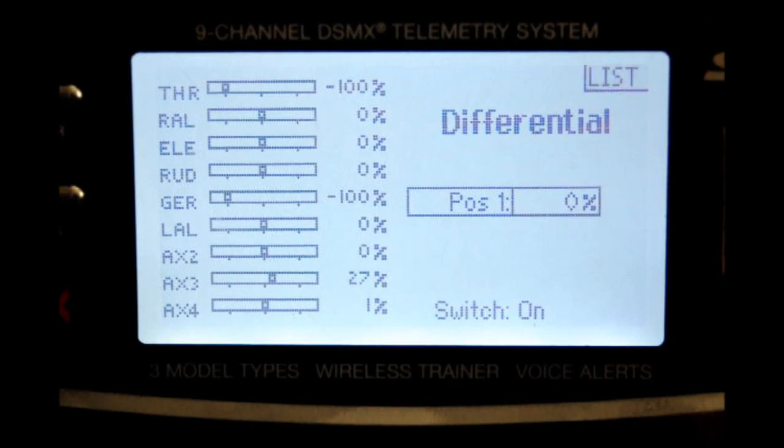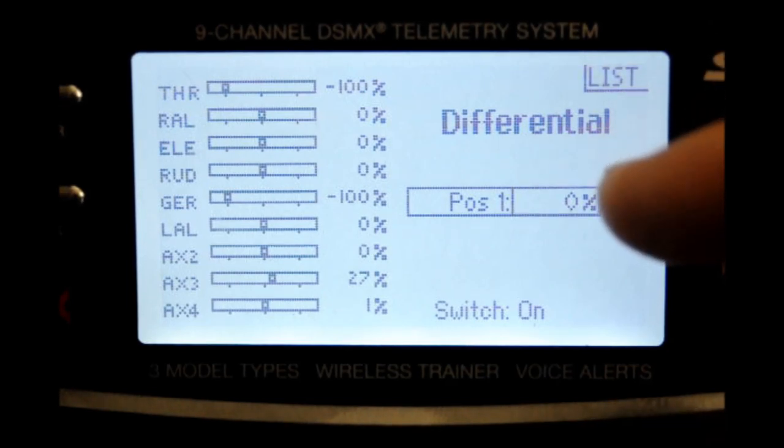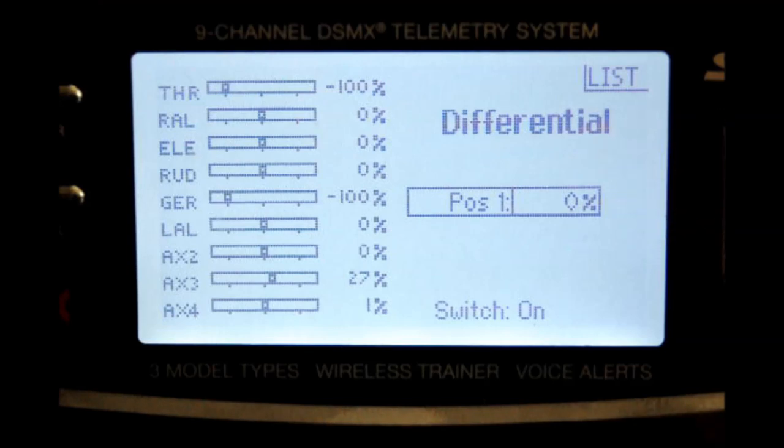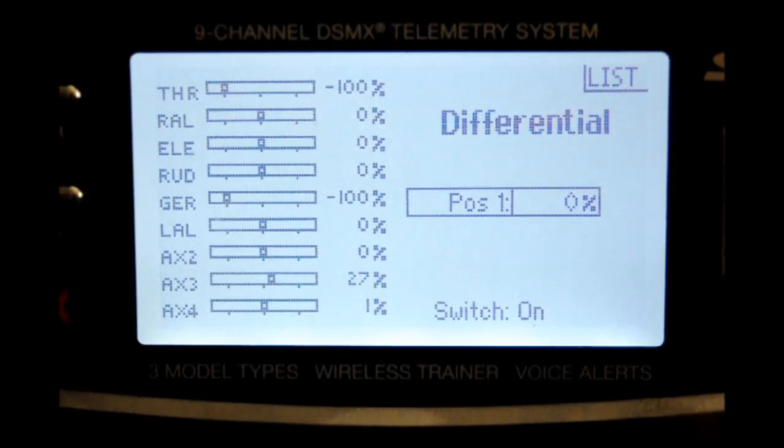Let's move it on down to position, and there you see it's highlighted the number box. We're going to go ahead and change that by first depressing the scroll switch once. It's now active. We can change that value from zero. We're going to go to 50.